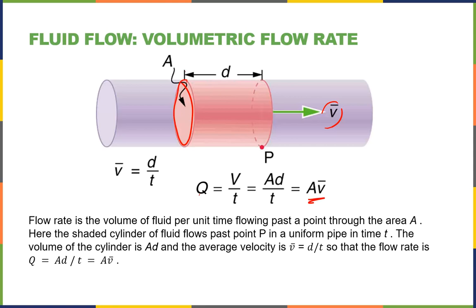Why is there a bar over the V? The bar represents the average velocity. Average is an important thing. As we talk about the difference between laminar flow and turbulent flow, we'll see that the speed of the flow is different in different parts of a pipe. That's why it uses the average flow rate.